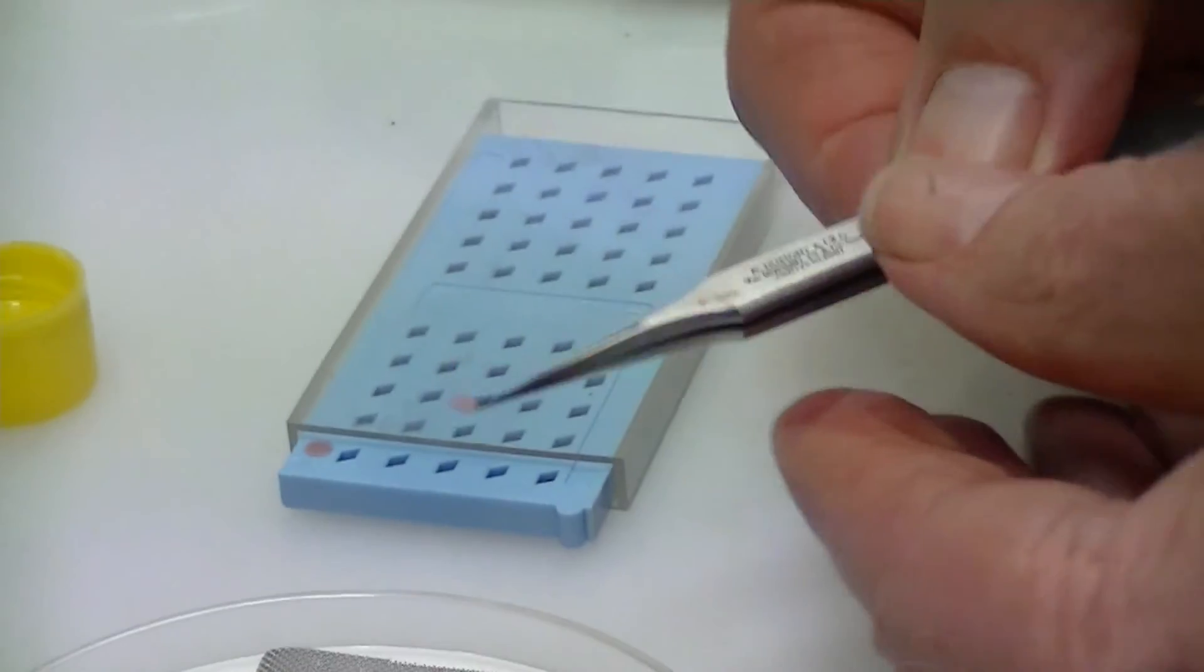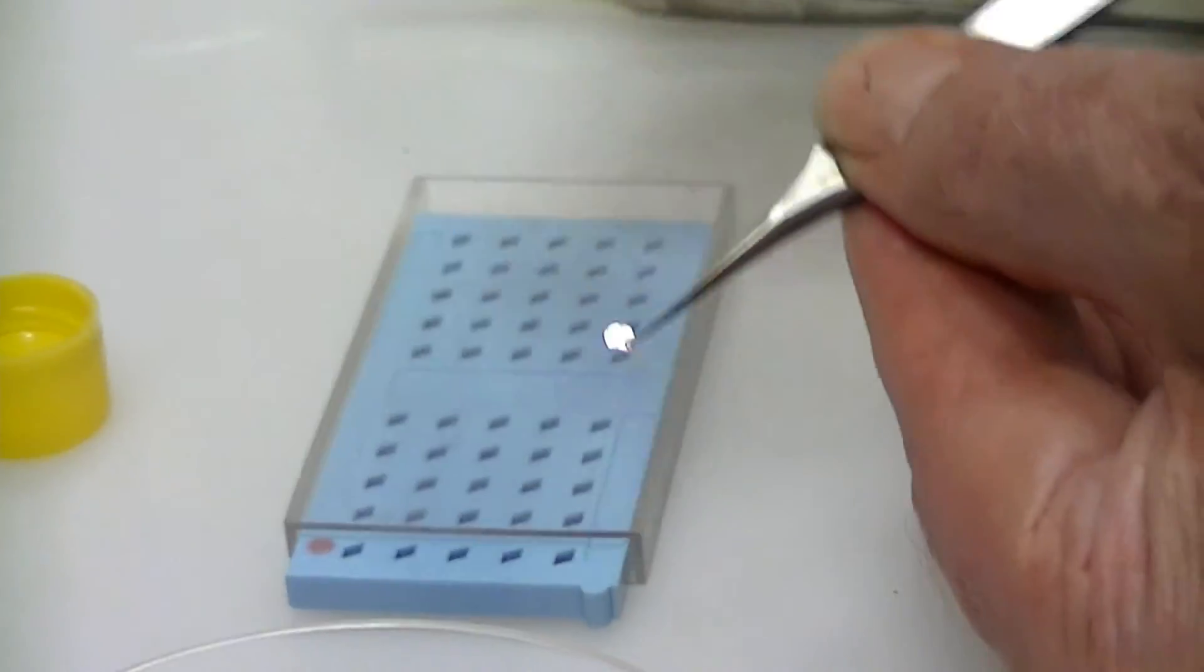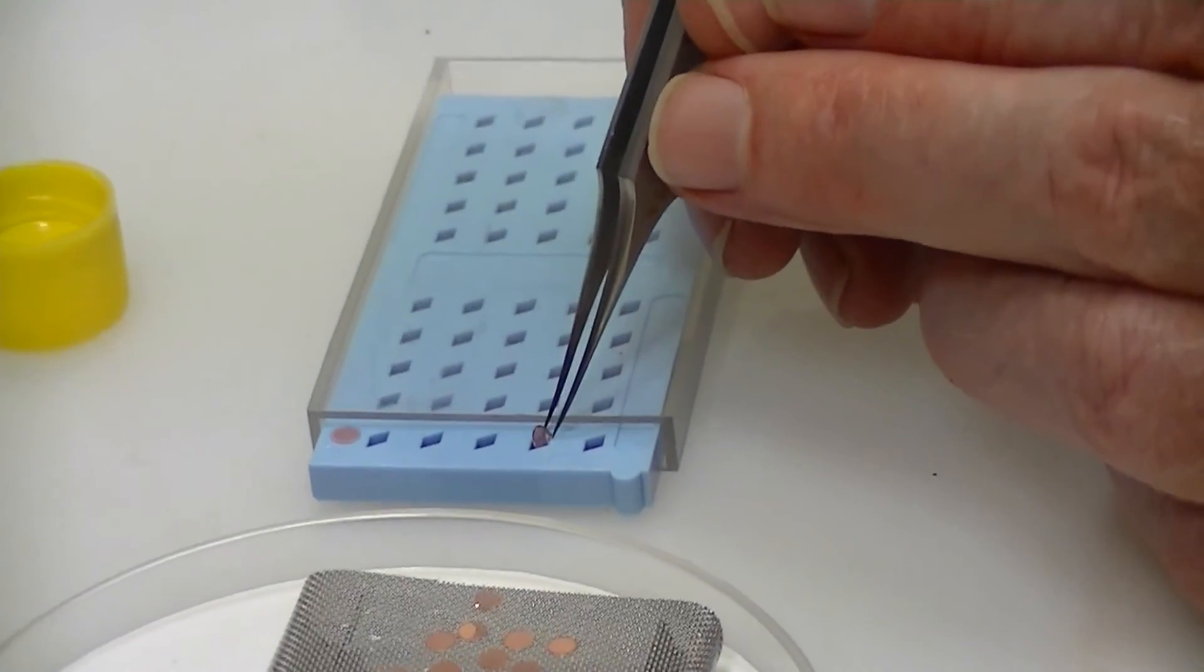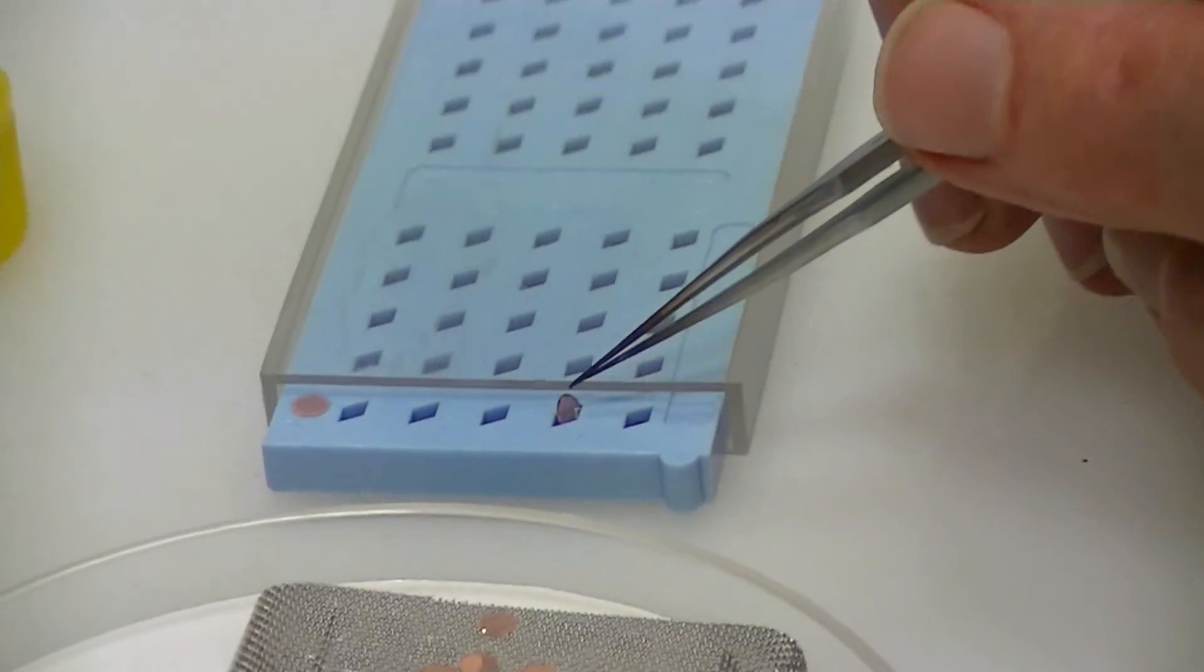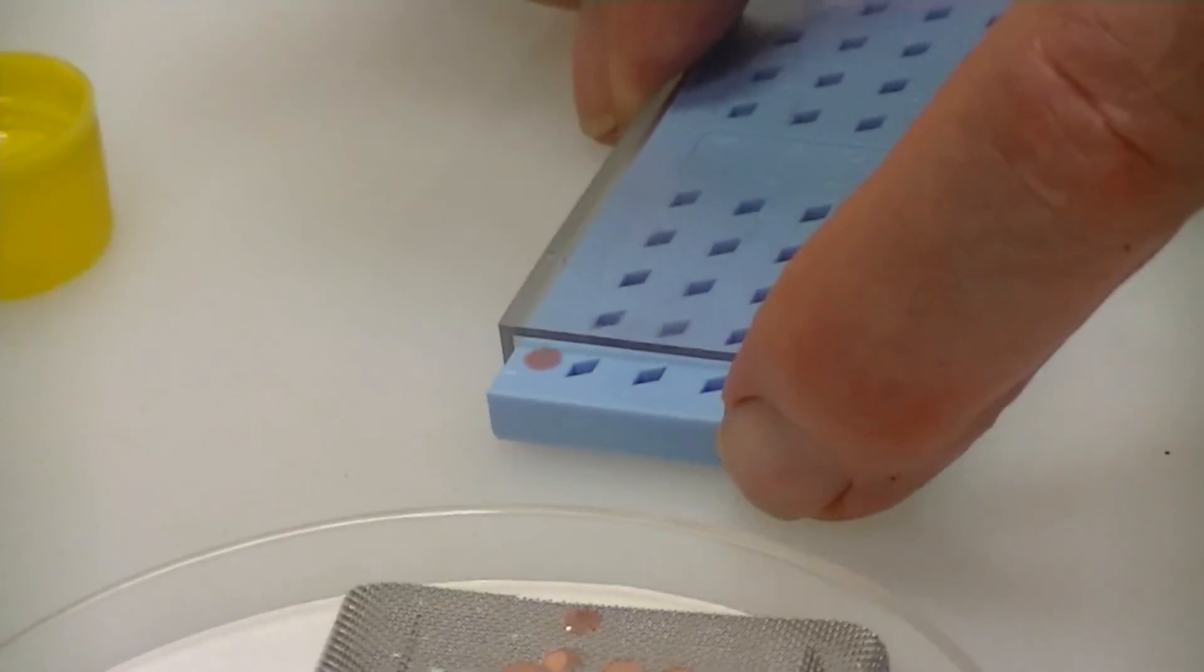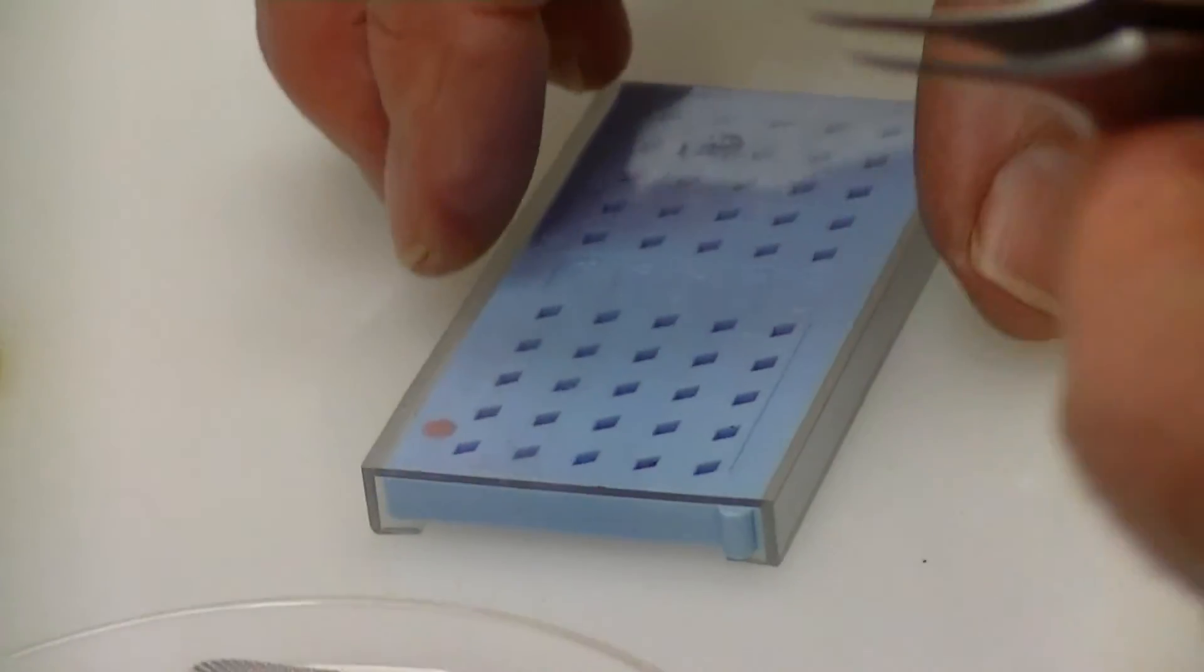Once we've prepared the grid, we can store it for a long time. We often use a grid box of this type where we put the grid directly into a little slot in this container. Those particles will be visible for several years as a negatively stained image. So we close the box and take this now to the electron microscope, mount the grid, and look at the particles.